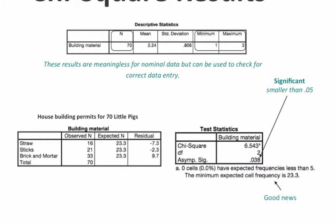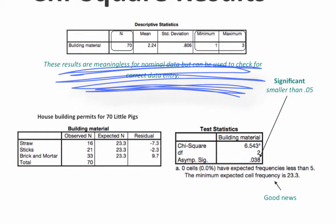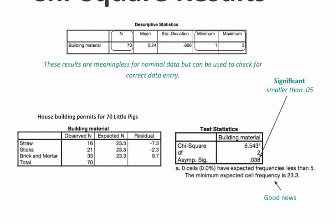As we look at the results, first of all we get those descriptive statistics. We get an n — a sample size of 70 — and we also get the minimum and maximum values. Check these data to make sure they are what you expect them to be. We thought there would be 70 permits, and there were, so the n is correct. The mean and standard deviation are useless — they are meaningless because this is nominal data. But the minimum and maximum allow us to check for correct data entry. If the minimum was 1 and the maximum was 33, that would mean we have some kind of data entry error, and we'd want to go back and check our data.